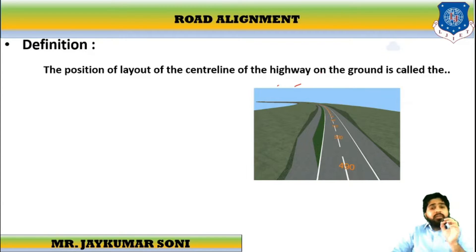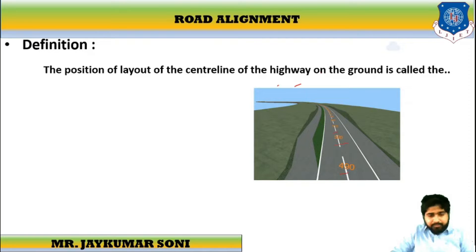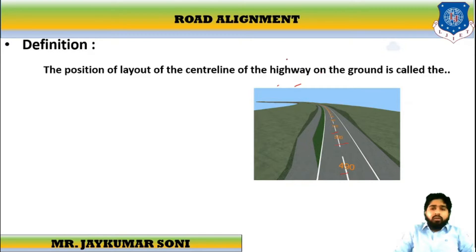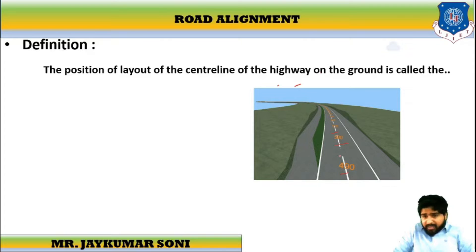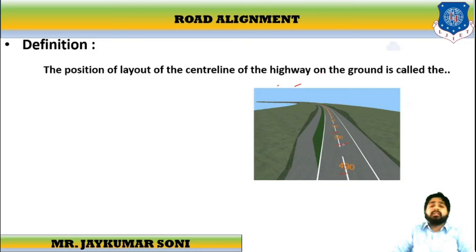The position or layout of the center line of the highway on the ground is called Road Alignment. You can see the center line with various digits marked over here. This position or layout of the center line on the highway is called Highway Alignment.